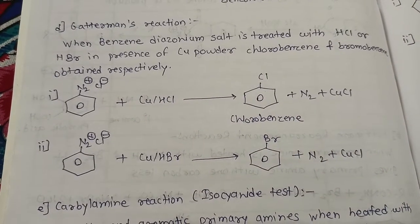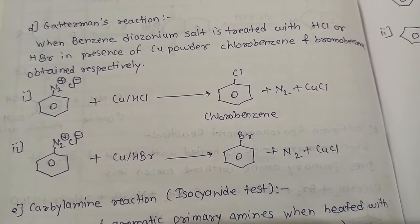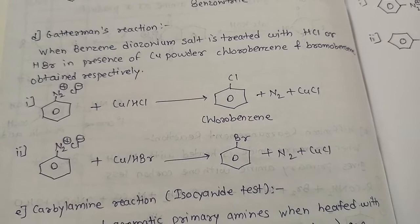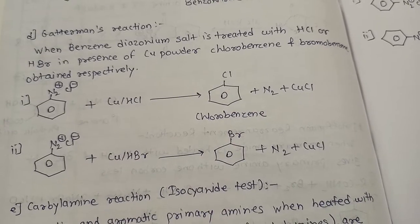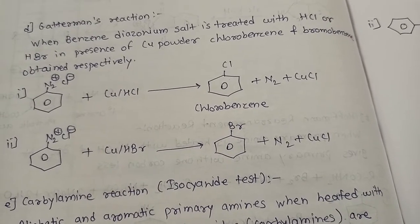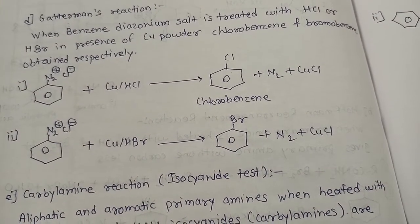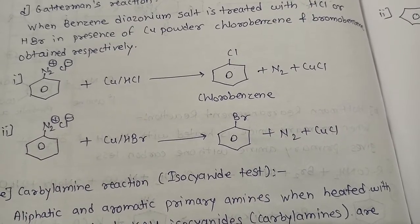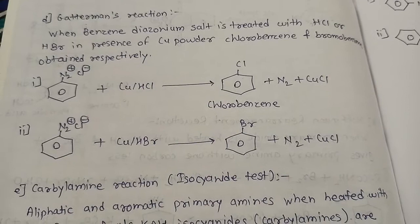The next reaction is Gattermann reaction. When benzene diazonium salt is treated with HCl or HBr in the presence of copper powder, chlorobenzene and bromobenzene are obtained respectively. The difference between Sandmeyer and Gattermann: in Sandmeyer we use Cu₂Cl₂/HCl, whereas here we use copper powder only along with HCl or HBr. Byproducts are N₂ and CuCl.